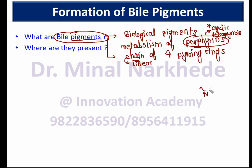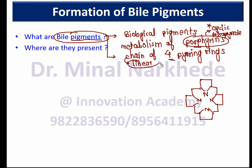Porphyrin rings are present in a cyclic manner. Bile pigments contain four pyrrole rings in linear form and are actually produced from porphyrin molecules. To convert porphyrins into pigments, the presence of enzymes is needed, so they are generated because of enzymatic reactions.